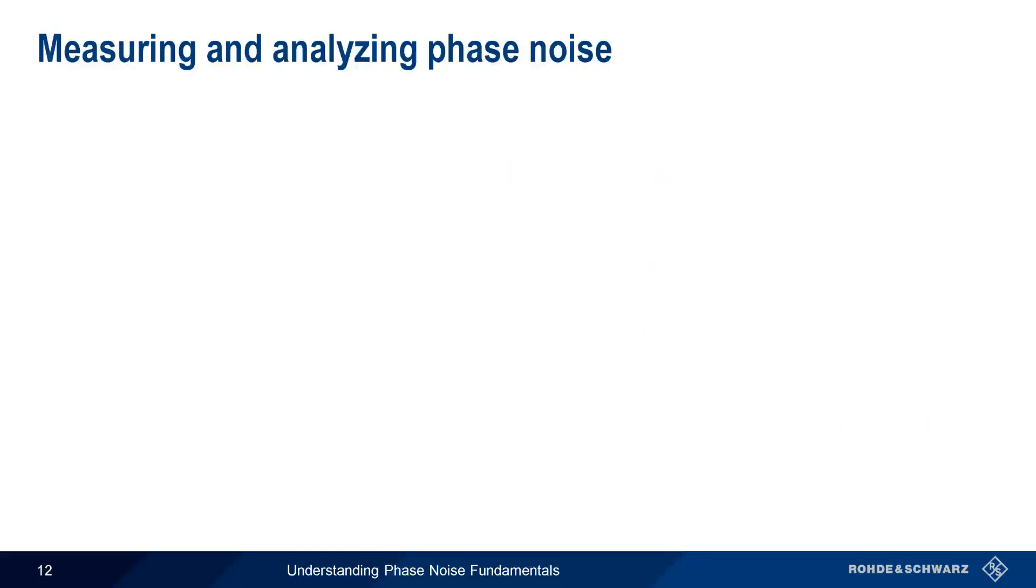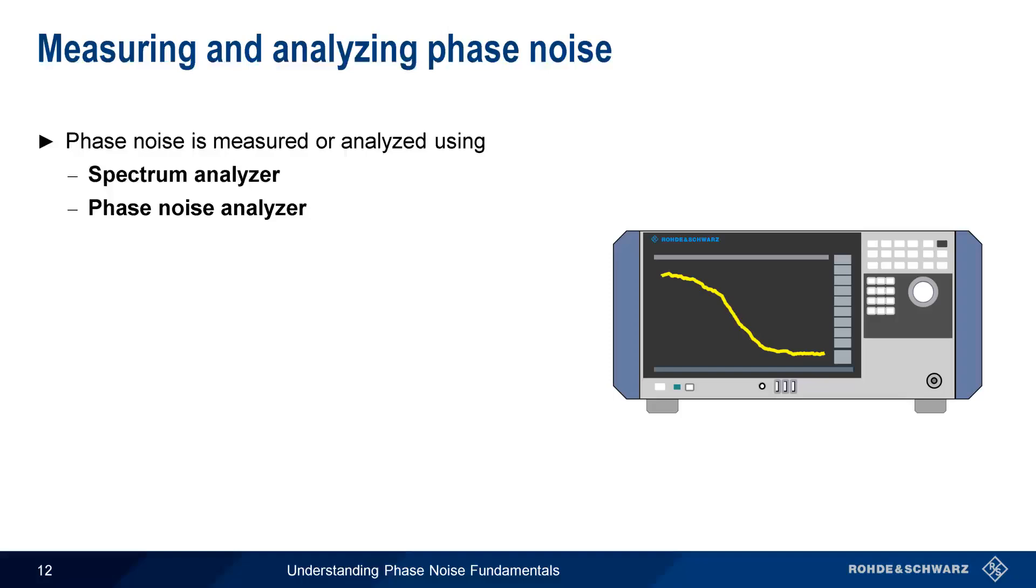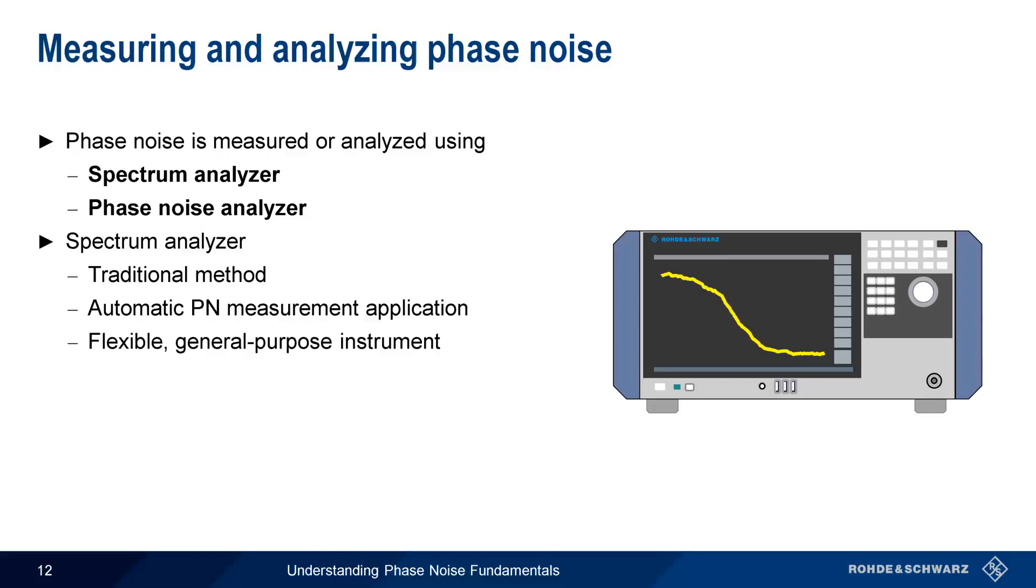Now let's look at how phase noise is measured or analyzed. There are two types of instruments that can be used to measure phase noise – spectrum analyzers and phase noise analyzers. Outwardly, these instruments often look very similar and display results in similar ways, but there are important differences between them. Spectrum analyzers are the traditional tool used for measuring phase noise. Although it's possible to measure phase noise by hand, in almost all cases, phase noise measurements on spectrum analyzers are performed using an automated phase noise measurement application or option. The greatest advantage of using a spectrum analyzer is that it's a flexible, general-purpose instrument that can be used for a wide range of other measurements.